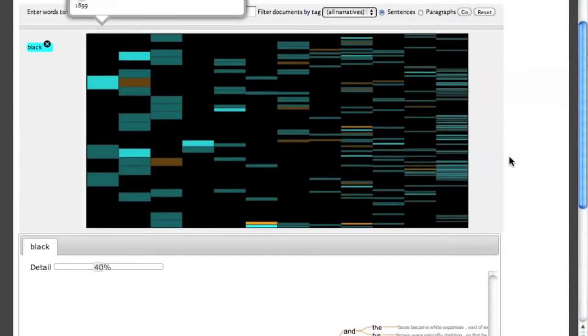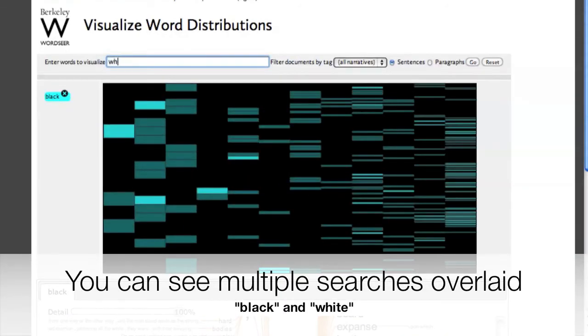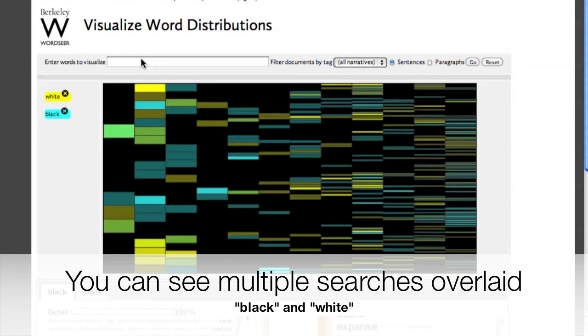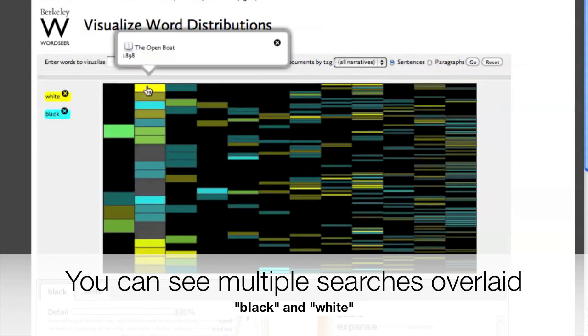In the zoomed out state, it still works with the heat map. The heat map allows you to visualize multiple words at a time. In this case, black and white.